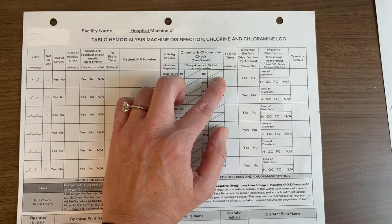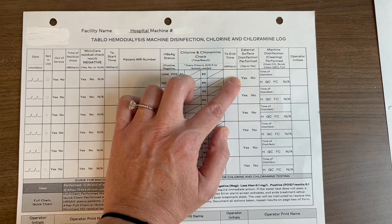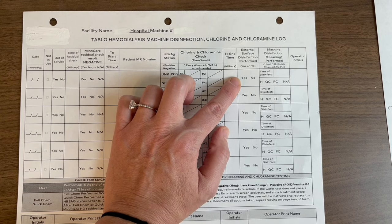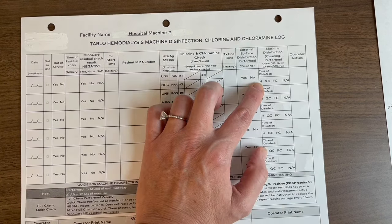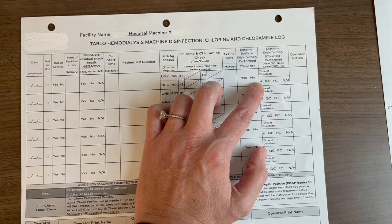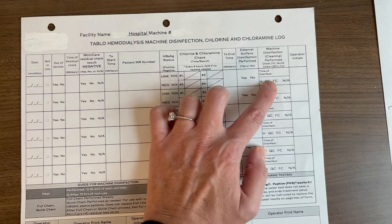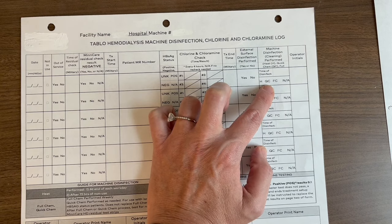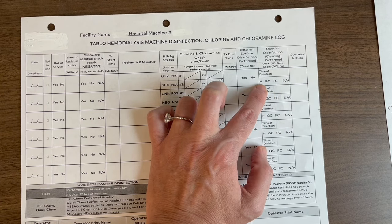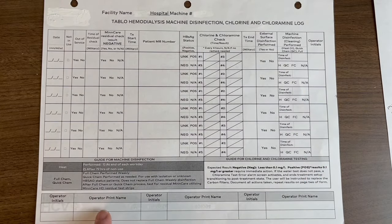In the next box, write the time the treatment ends. The following box says 'external surface disinfection performed' — the machine needs to be disinfected between patients with bleach wipes. Next, 'machine disinfection cleaning performed': the cleaning method used in the ICU is heat. The dialysis nurses are responsible for the other methods. If you performed heat cleaning, please document that. To complete the form, place your initials in the designated areas and sign the bottom.